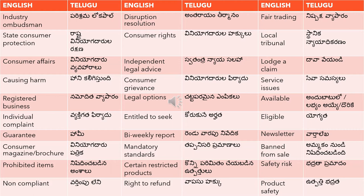'Local tribunal' — in English, a tribunal is basically a local court set up in Australia to fast-track certain consumer complaints. In such a case, 'local tribunal' is translated as 'stanika nyaya dhikarano' — 'stanika' means local, and 'nyaya dhikarano' means tribunal.